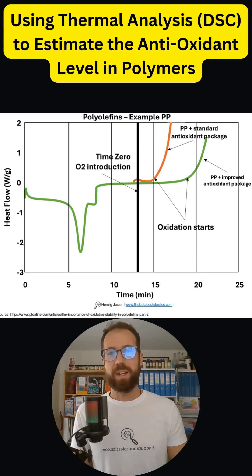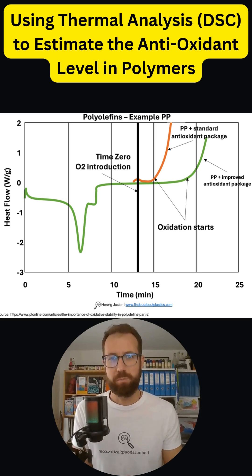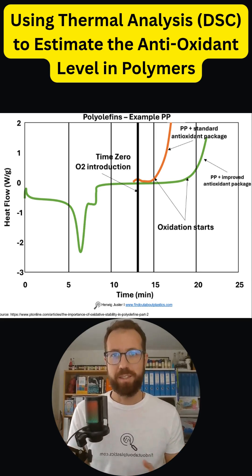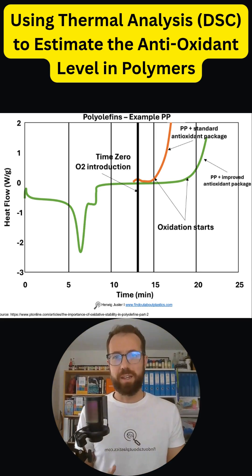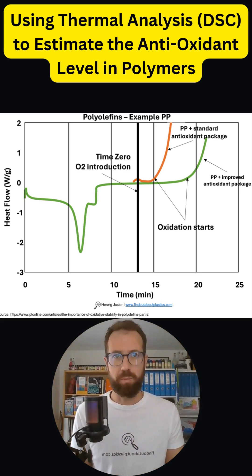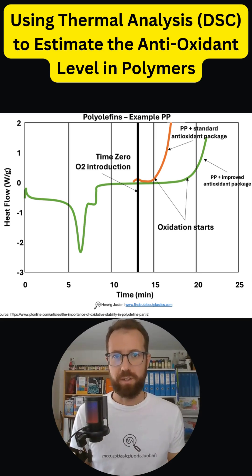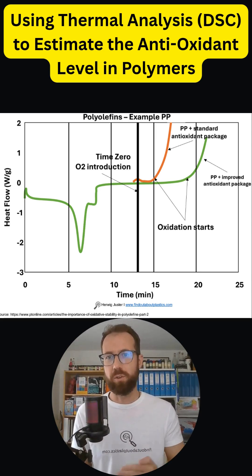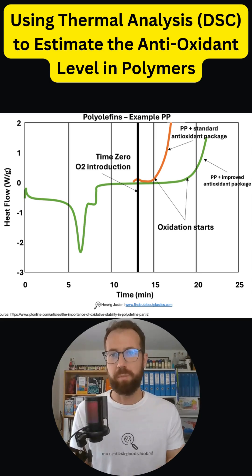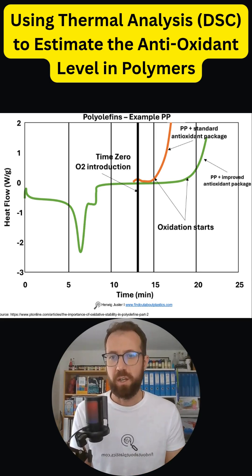Using thermal analysis, in particular DSC — differential scanning calorimetry — to estimate the antioxidant level in polymers. DSC measures the heat absorbed or released by a material as the temperature or time changes.